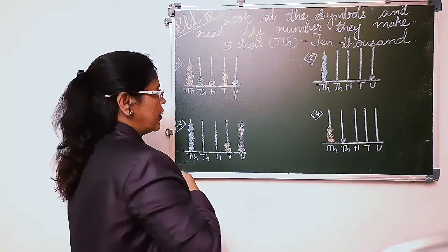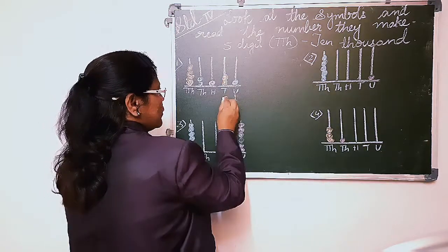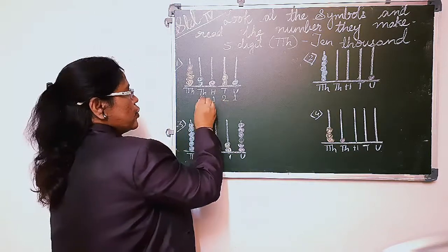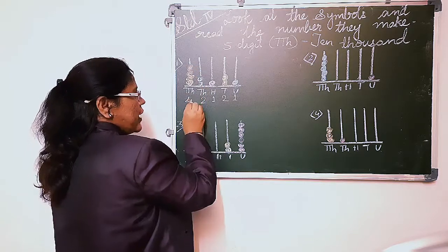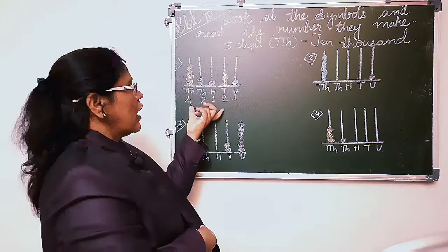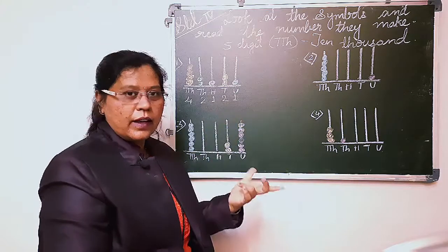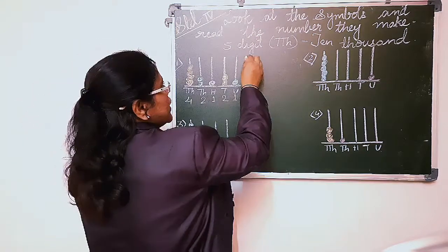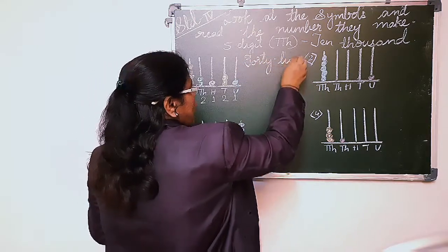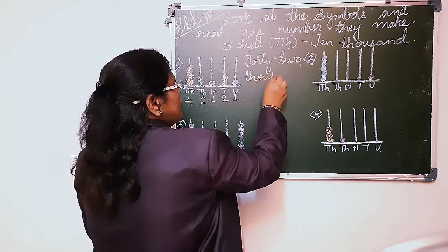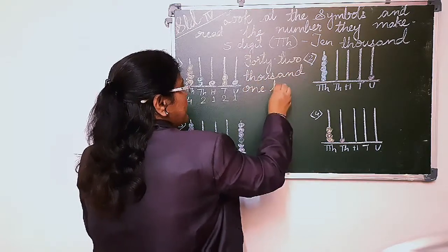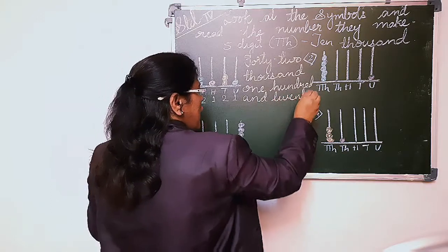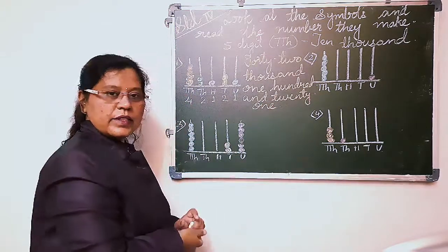Units place is one. Tens place: one, two. Hundreds place: one. Thousands place: two. Ten thousands place: one, two, three, four — four beads. Now read the number: it is forty-two thousand one hundred and twenty-one. We'll write the number in words: forty-two thousand one hundred and twenty-one.